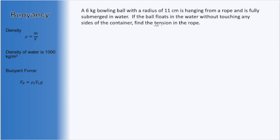Reading through this problem, we can see that we are looking for tension, which is a force. We are also told that as this bowling ball is hanging, it is floating in the water — in other words, it's just staying still. So thinking about forces and the object not moving, this doesn't seem too different from our older free body diagram problems. The only difference is that since the ball is submerged in water, we will have this new buoyant force to keep track of as well.